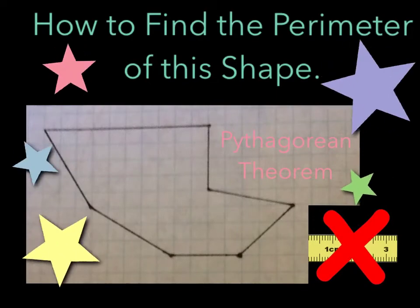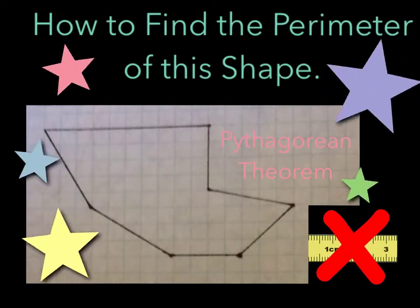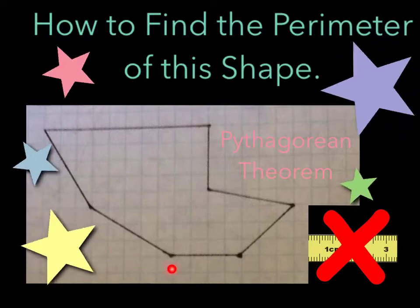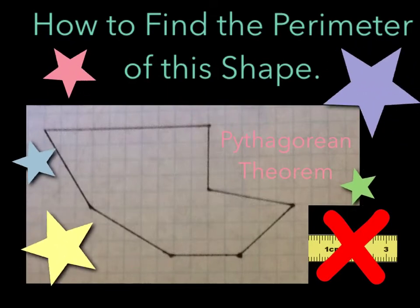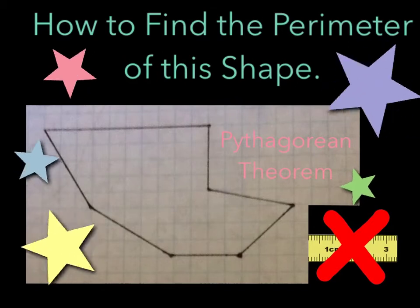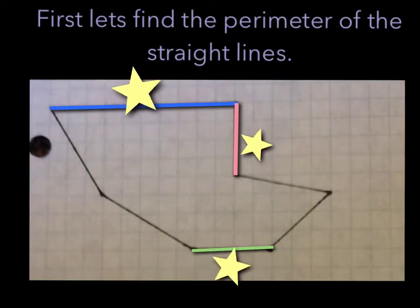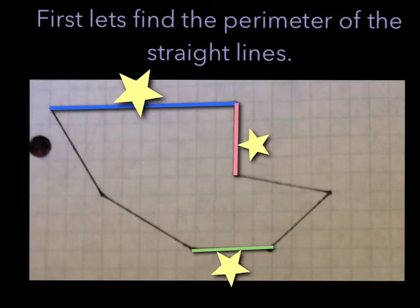Today we are going to learn how to find the perimeter of this shape using the Pythagorean theorem and without using any rulers. We need to find the perimeter of the straight lines, which are the blue, the pink, and the green. First we need to calculate how many units each side is.